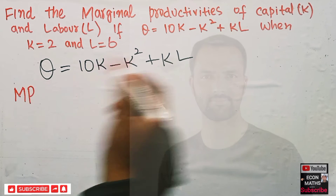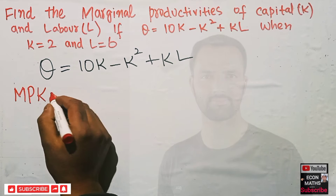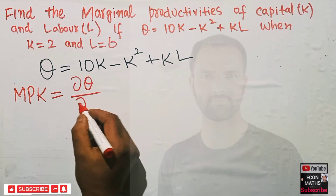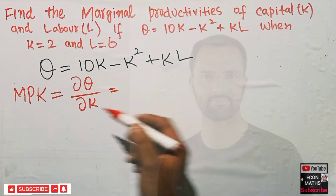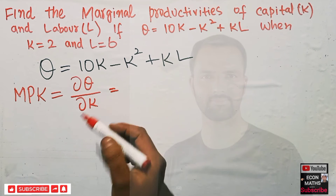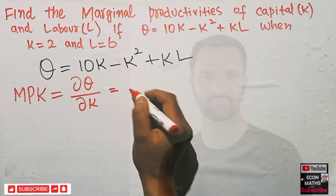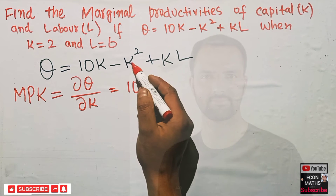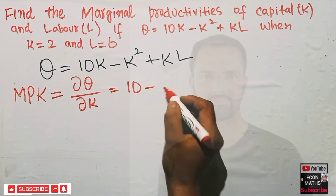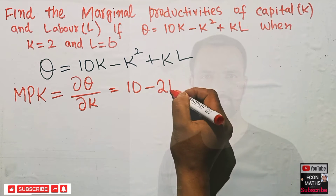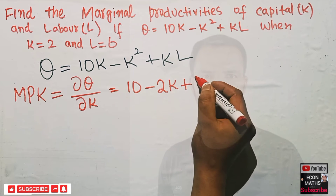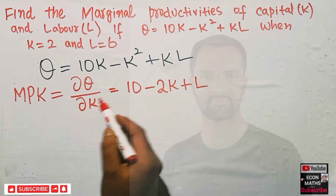First we will find the marginal productivity of capital. The marginal productivity of capital is given by the partial derivative of the production function with respect to capital. We differentiate partially with respect to K. The derivative of K is 1, so we get 10. The derivative of K² is 2K. The derivative of KL with respect to K gives us L. So MPK = 10 - 2K + L.